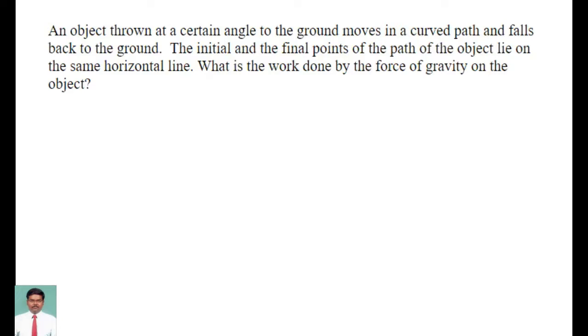An object thrown at a certain angle to the ground moves in a curved path and falls back to the ground. The initial and final points of the path of the object lie on the same horizontal line. What is the work done by the force of gravity on the object?